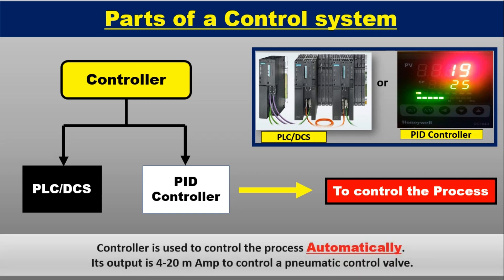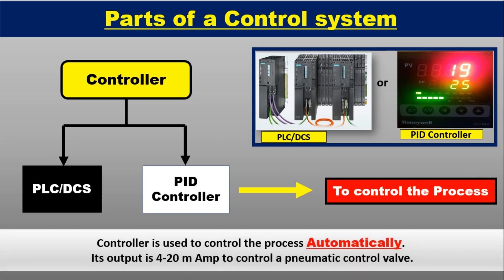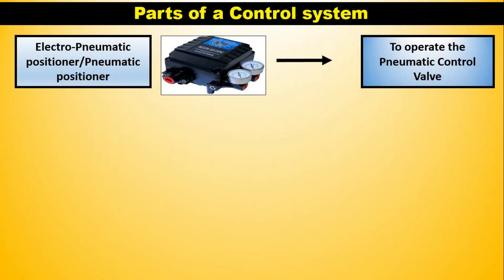Here the main point is the controller is used to control the process automatically and its output is 4 to 20 mA to control a pneumatic control valve. Now see the other part of control system.